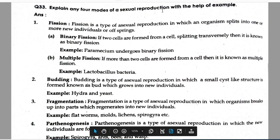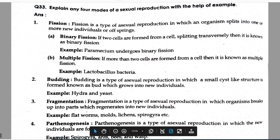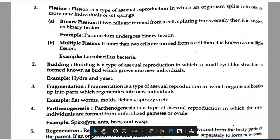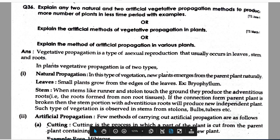Explain four modes of asexual reproduction with the help of examples. Explain the method of fission, budding, fragmentation, parthenogenesis, and regeneration, as well as vegetative propagation.